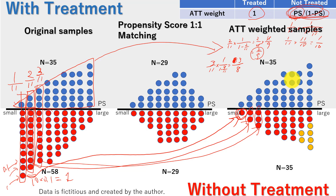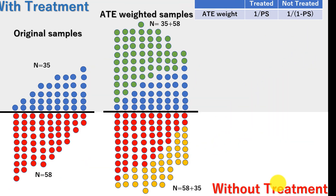ATT weight seems better than propensity score one-by-one matching because this method maintains the entire distribution of people who are treated. With propensity score one-by-one matching, we lose some observations, whereas ATT weighted samples preserve the entire treated population.